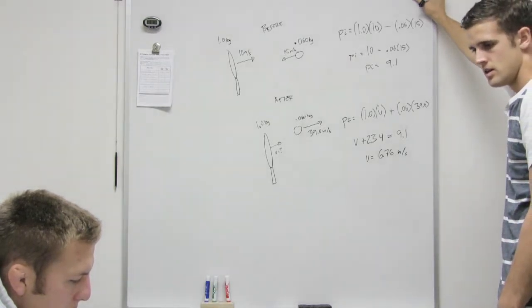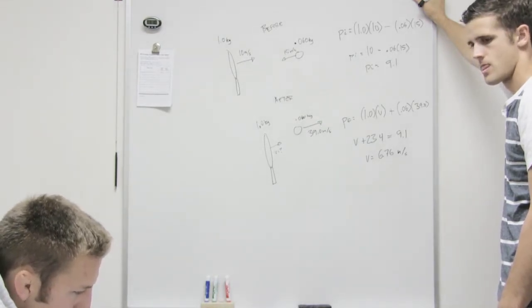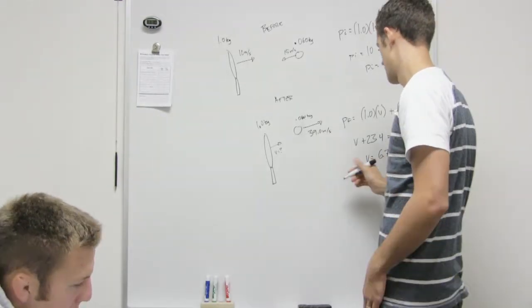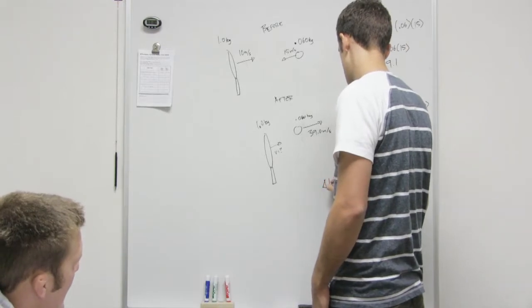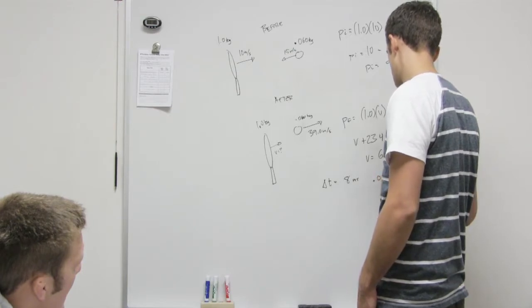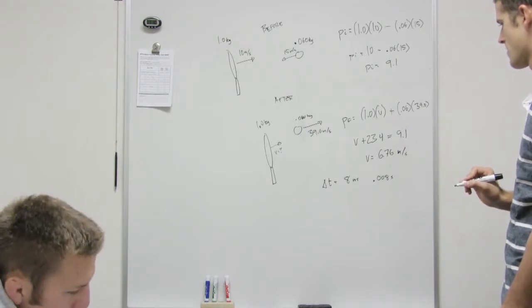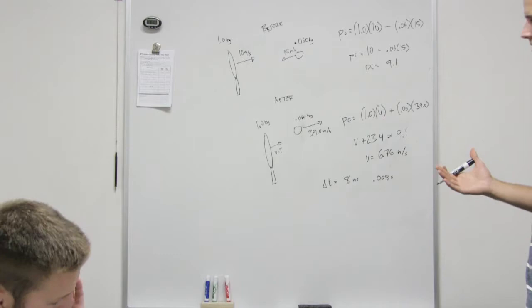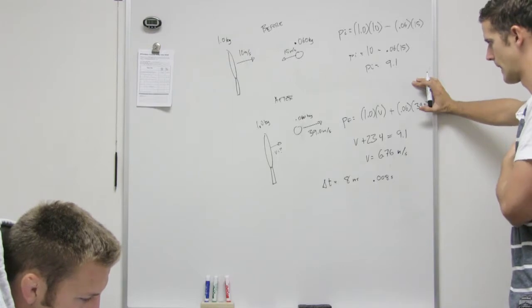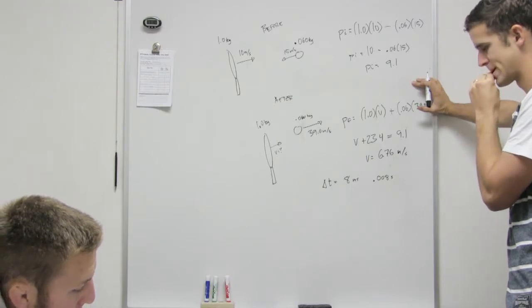If the tennis ball and racket are in contact for 8 meters per second - it's actually they're in contact for 8 milliseconds, right? Oh yeah. So delta T would be 8 milliseconds, which is 0.008 seconds. Oh okay. So a millisecond is just a thousandth of a second? That makes sense. So what is the average force that the racket exerts on the ball?